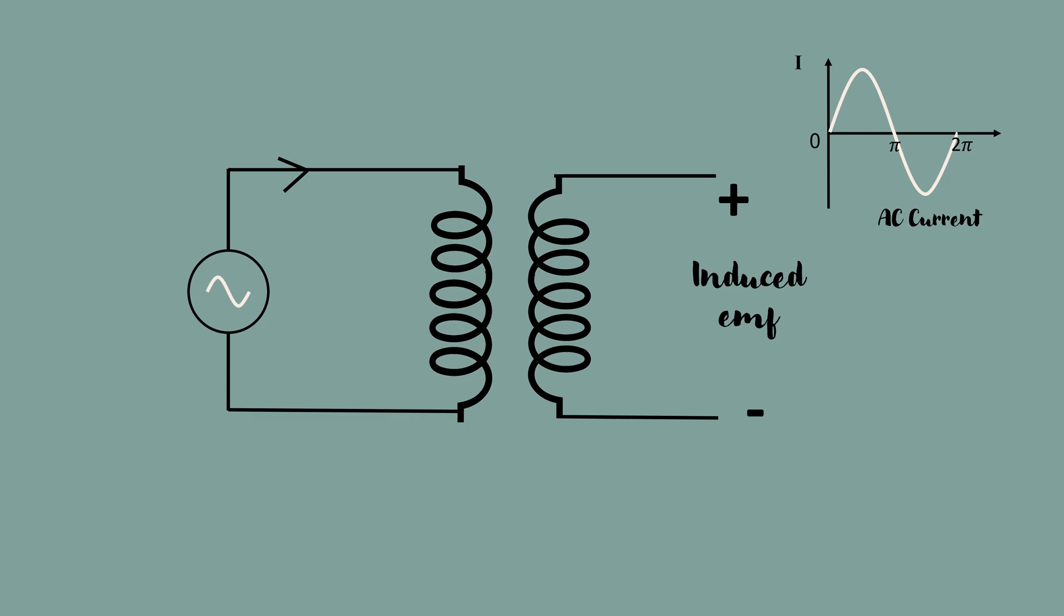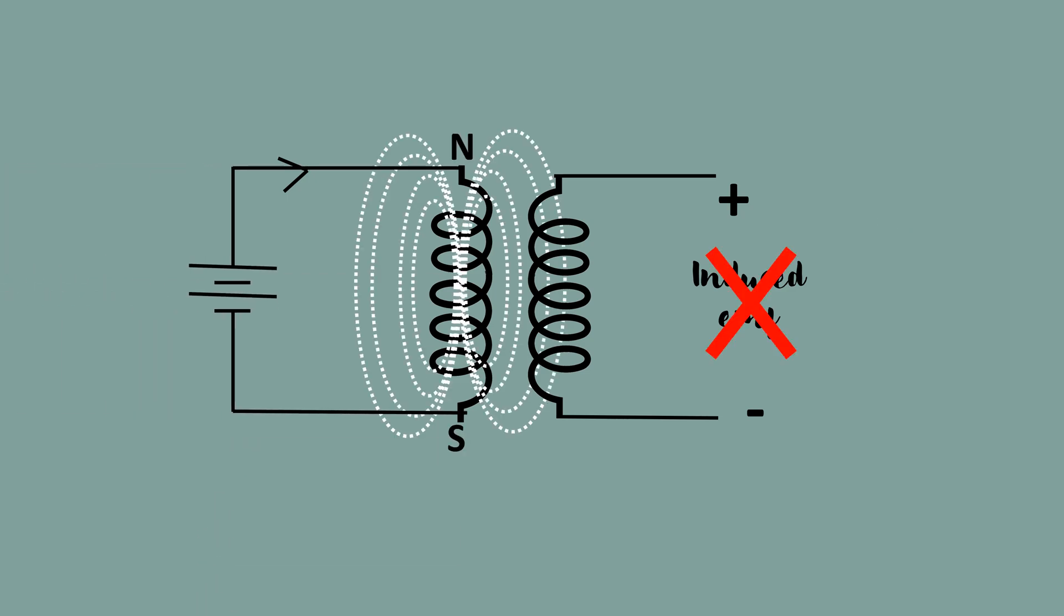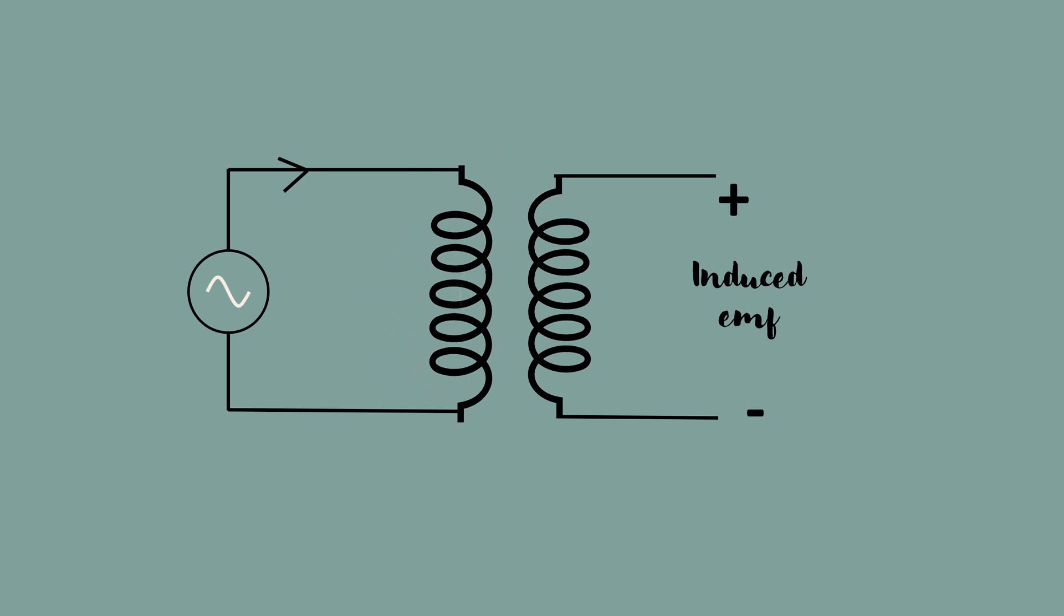The EMF is not induced when a DC current passes through the coil because magnetic field produced here is constant. The strength of the magnetic field can be increased by placing a magnetic core of ferromagnetic material. This is the same principle used in transformer.